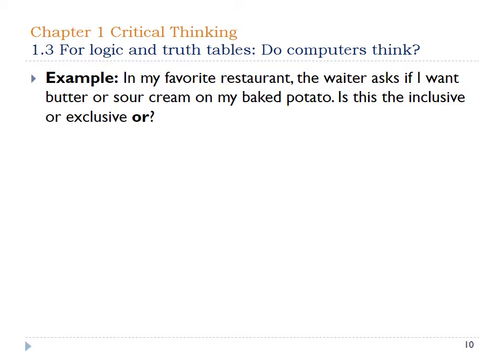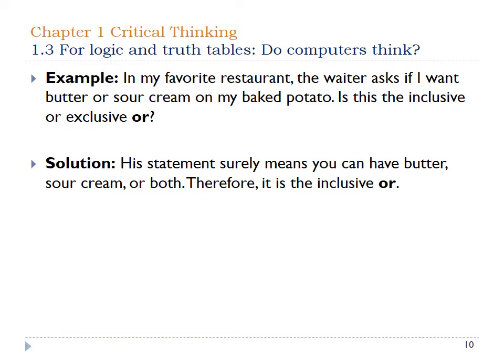Here's an example for a disjunction: in my favorite restaurant, the waiter asks if I'd like butter or sour cream on my baked potato. Is this inclusive or exclusive? Inclusive means I could have one or the other, or both. Exclusive means I can only have one or the other. In this case, butter or sour cream on a potato would be inclusive, because I could have both or either. A good example of exclusive would be: if your meal comes with fries or a baked potato — I can only get one of those two.